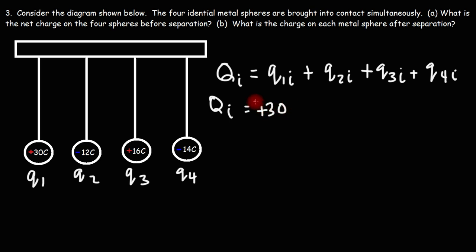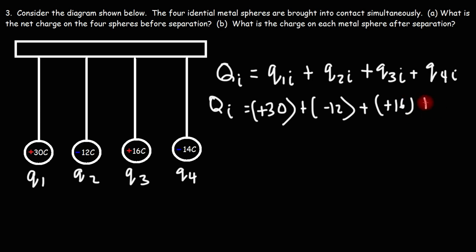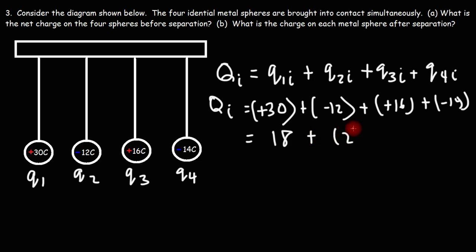We have +30 plus -12 plus +16 plus -14. 30 plus negative 12 is 18, and 16 plus negative 14 is positive 2. So Q initial — the total charge of the system before separation, once brought into contact — is positive 20 microcoulombs.